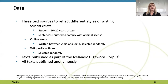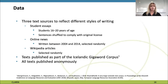The corpus consists of three text sources chosen to reflect different styles of writing: student essays, online news, and Wikipedia articles. The essays are written by students 16 to 20 years old, and sentences within each file have been shuffled to comply with the original license. The online news were written between 2004 and 2014 and selected randomly. The Wikipedia articles are undated but also selected randomly. All of these texts were accessible because they had been published as part of the Icelandic Gigaword corpus, and they are published anonymously in the error corpus.